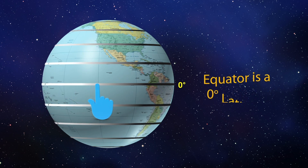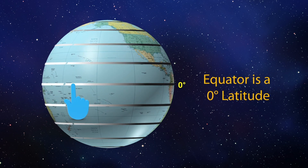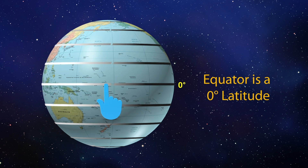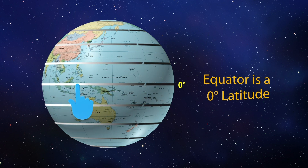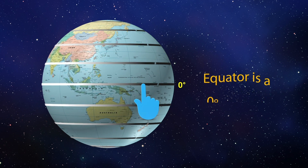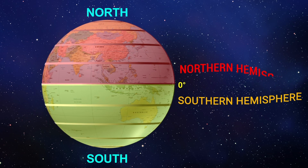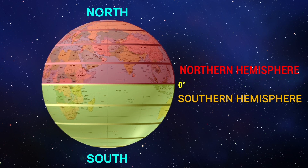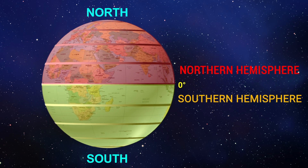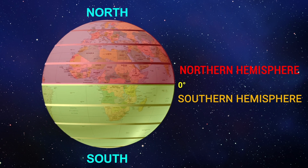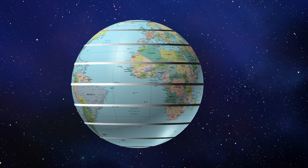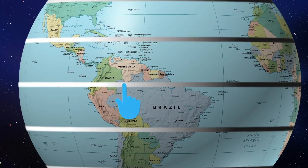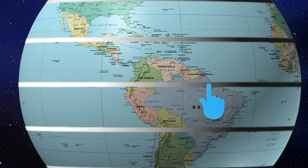An imaginary line around the middle of the earth is called the equator, and the equator is a zero-degree latitude. An equator divides the earth into a northern hemisphere and a southern hemisphere. The earth is widest at its equator.